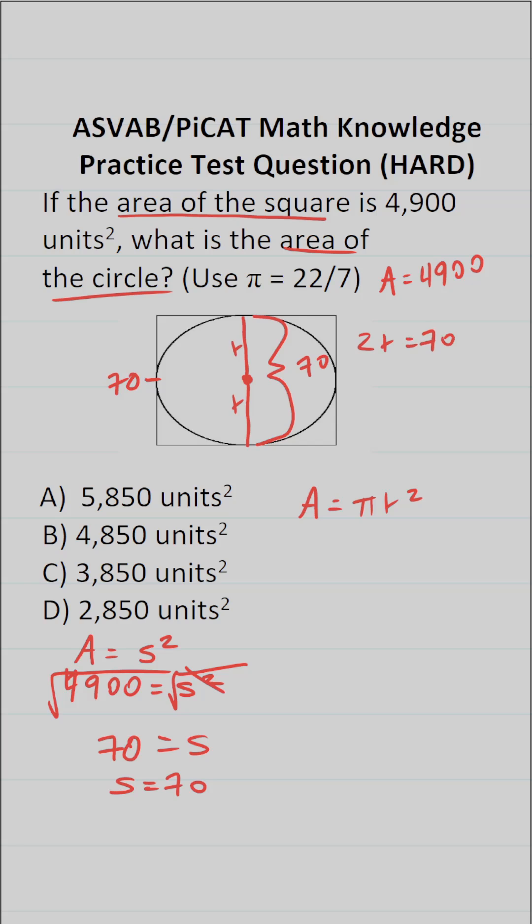So in other words, 2r equals 70. We just need r for our area formula, so we're going to divide both sides of this equation by 2. This says r, the radius of this circle is 70 divided by 2, which is 35.